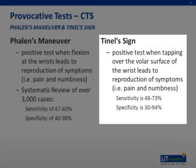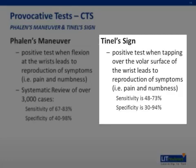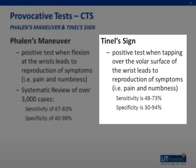The other most commonly performed provocative test is Tinel's sign. For this maneuver, the wrist is held in extension while the examiner provides a gentle percussion over and just proximal to the transverse ligament. Similar to Phalen's maneuver, a positive test causes reproduction or worsening of the patient's symptoms of pain or paresthesia. Generally, the sensitivity of Tinel's sign is thought to be less than that of Phalen's maneuver, with reported values in a range of 48 to 73 percent. The specificity of Tinel's sign also has a broad range, with reported values spanning from 30 to 94 percent.